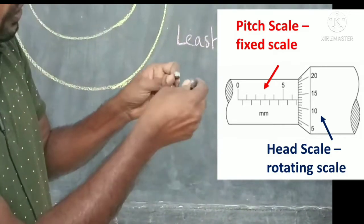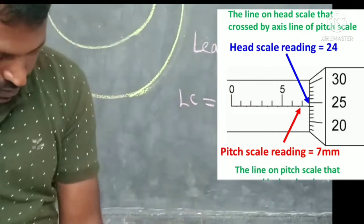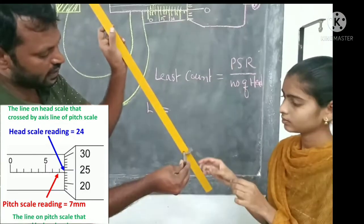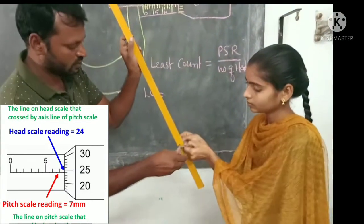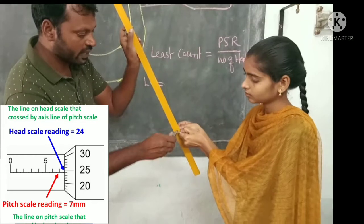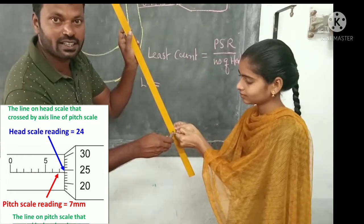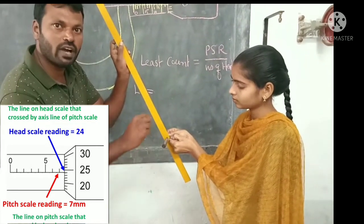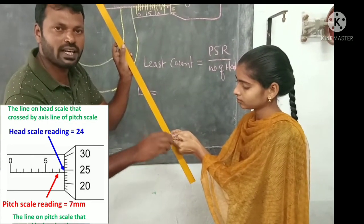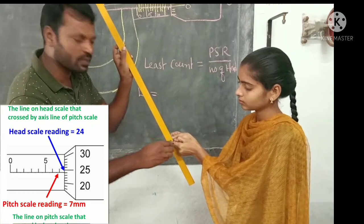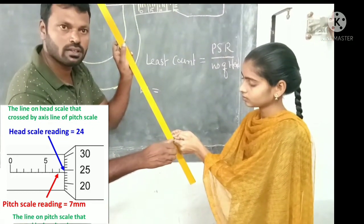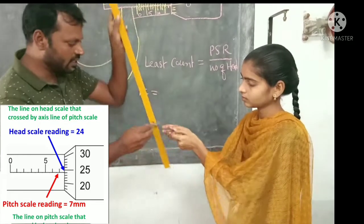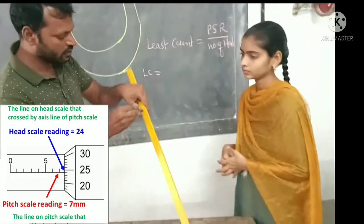Here I want to find out the radius of this bar. When I am tightening it, when I get a sound like tick tick tick, I should stop there. I should not rotate further after getting that sound. When this sound comes, you have to stop and look at the head scale.